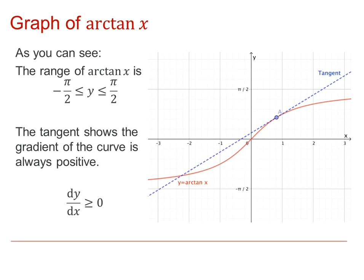First let's consider the graph of y equals Arctanx. If we reflect the tangent curve, y equals tanx, in the line y equals x, we'll get the inverse function Arctan. But because tangent is a periodic function, we need to limit the range of Arctan to lie between negative pi by 2 and pi by 2.